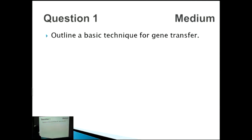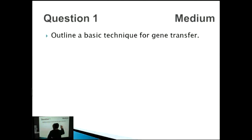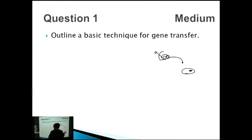This question is about genetic engineering and biotechnology. The first part is a relatively straightforward question where we have to outline a basic technique for gene transfer. To summarise: we've got organism A — let's say it's a snail — and we want to take one of the genes from the snail and insert it into a bacteria because it might produce a useful protein.